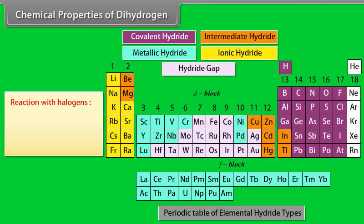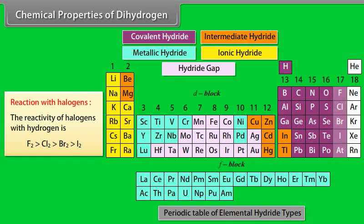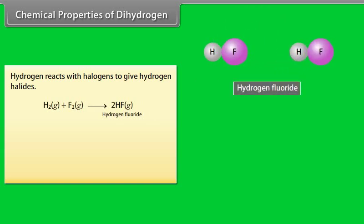Chemical properties of dihydrogen. Reaction with halogens: The reactivity of halogens with hydrogen is fluorine greater than chlorine, greater than bromine, greater than iodine. Hydrogen reacts with halogens to give hydrogen halides.